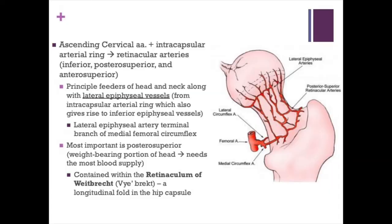Once you have those ascending cervical arteries becoming the intracapsular arterial ring, the retinacular arteries are given off — branches of inferior, posterosuperior, and anterosuperior. They are the principal feeders of the head and neck along with the lateral epiphyseal vessels. The lateral epiphyseal artery is the terminal branch of the medial femoral circumflex. The most important is the posterosuperior retinacular artery, which serves the weight-bearing portion of the femoral head. These are contained within the retinaculum of Weitbrecht, a longitudinal fold in the hip capsule.